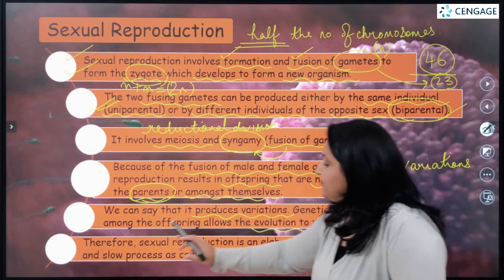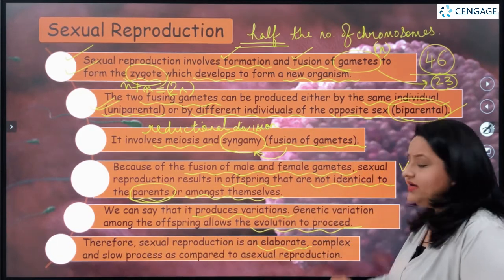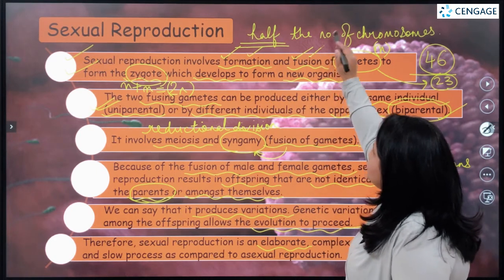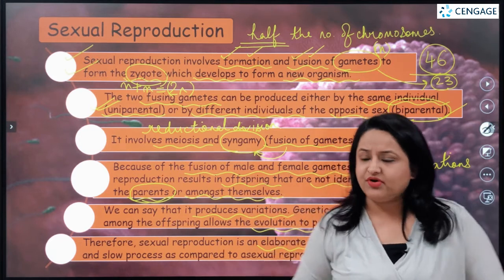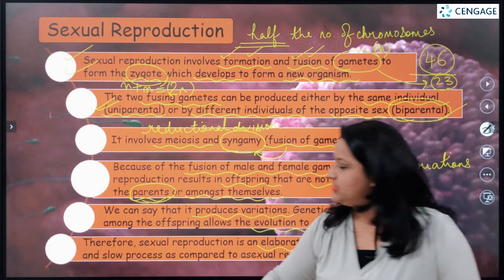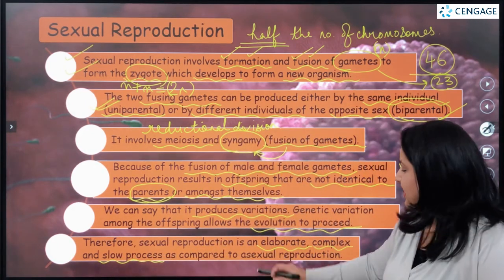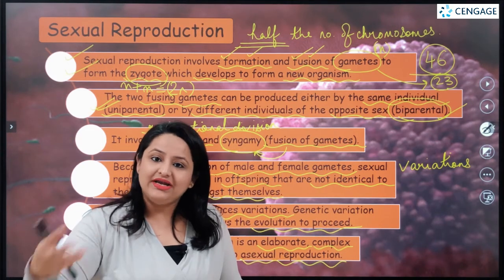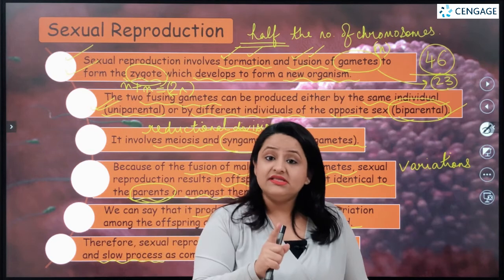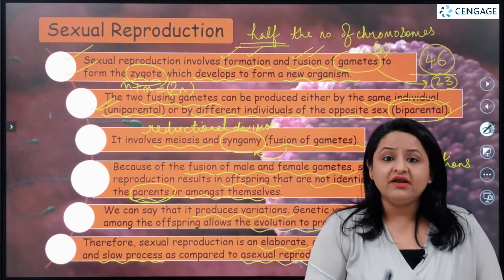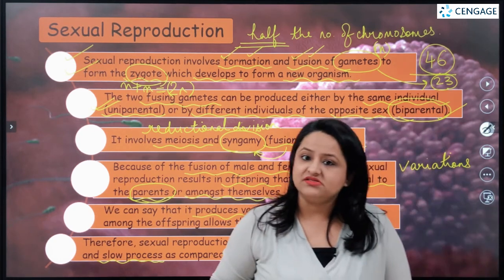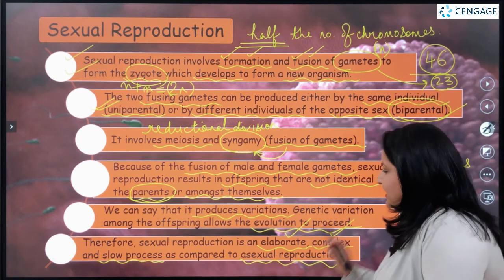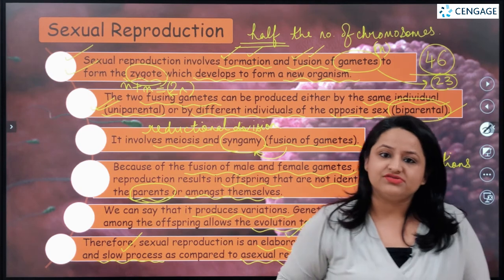Sexual reproduction is an elaborate process because it involves the formation and then fusion of gametes. It is also complex and slow compared to asexual reproduction, where only one parent is involved and just keeps on dividing to increase numbers. In sexual reproduction, the formation and fusion of special cells called gametes is required, making it an elaborate, complex, and slow process in comparison to asexual reproduction.